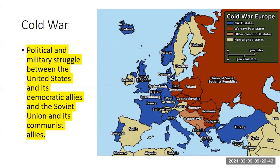Western Europe is blue, and they're all going to be democracies supported by the United States. Eastern Europe is red, and those are communist states supported by the Soviet Union. And it's still being led by Joseph Stalin. Of course, he'll pass away in the mid-1950s. But at the beginning of the Cold War, the first 10 years, he is the dictator of the Soviet Union.